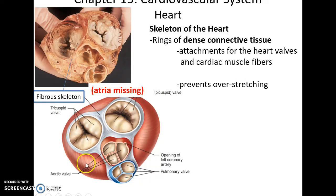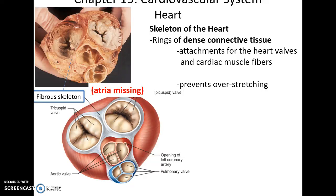If you remove the atria and look down, you can see the four valves — the two atrioventricular valves and the two semilunar valves — surrounded by rings of connective tissue. These are referred to as the fibrous skeleton of the heart, which helps attach the heart's valves together, serves as insertion points for the cardiac muscle fibers, and helps prevent the valves from overstretching.